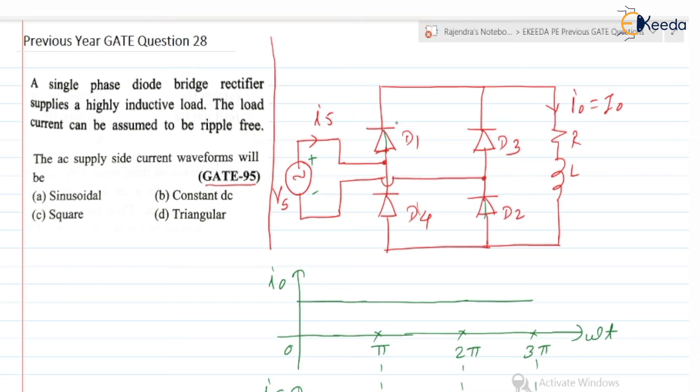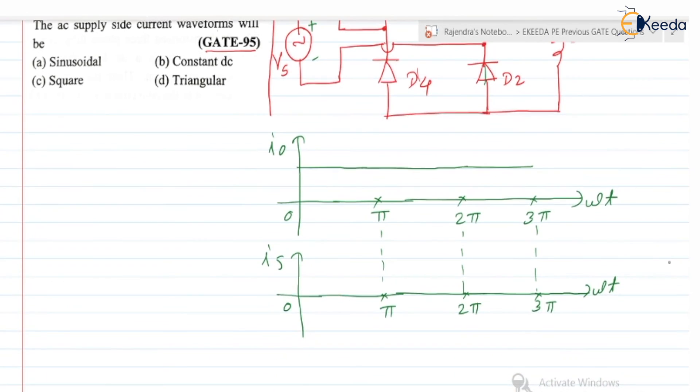Means here can we say that Is is equal to same as that of the I0? Yes, Is is same as that of the I0. When D1, D2 conducts, Is is equal to I0. So Is is equal to capital I0, so it is a constant current. It is having a magnitude of capital I0. This is from 0 to pi.